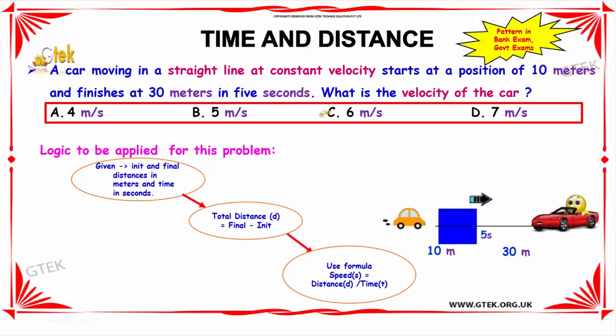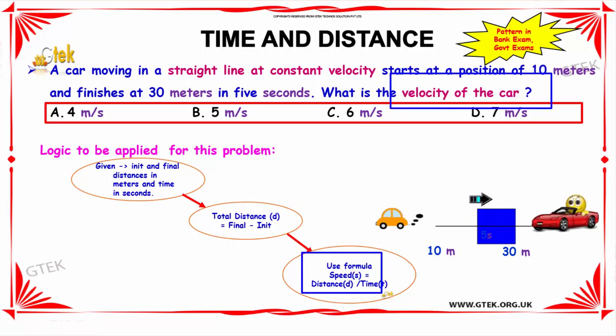By using the formula, total distance is equal to final distance minus initial distance will identify the total distance. And, we need to identify the velocity of the car by using the formula, speed is equal to distance by time.